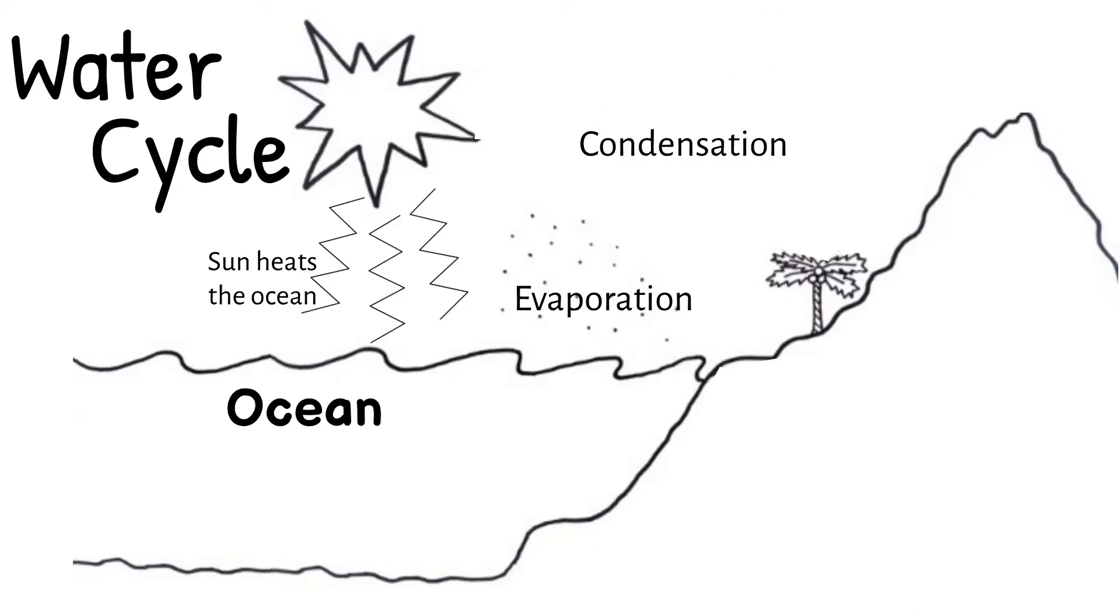Condensation is next in our water cycle, and this process is opposite of evaporation. Condensation is the cooling of water in the atmosphere, which changes it from a gas back to a liquid. Condensation is the step of the water cycle responsible for the formation of clouds.